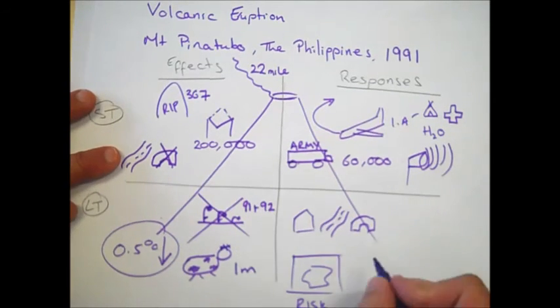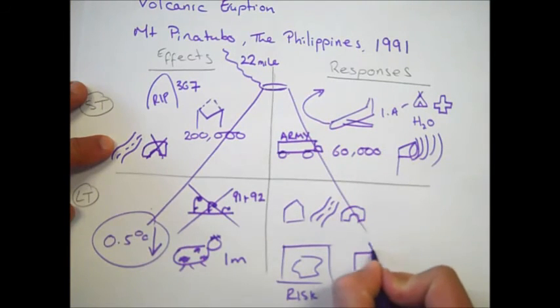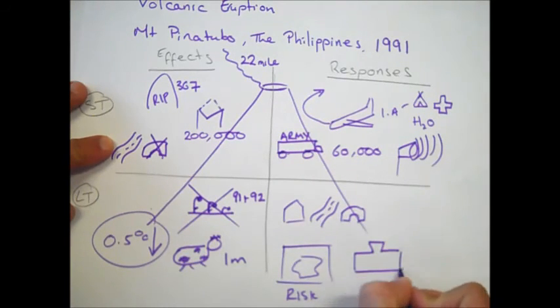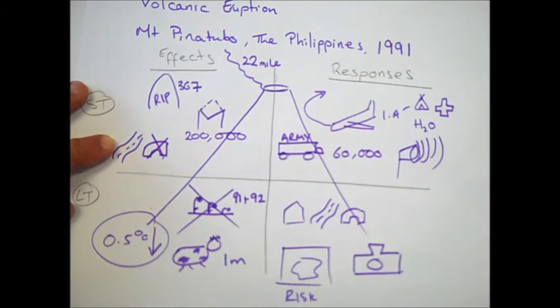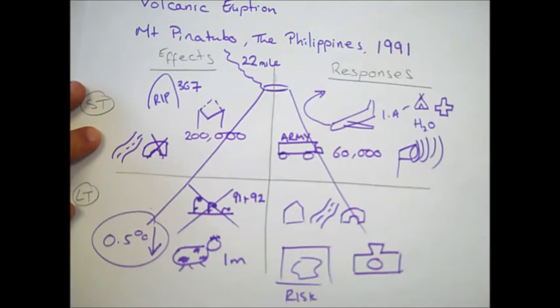We also saw an increase in monitoring. Mount Pinatubo had been dormant and people had become maybe complacent and hadn't been monitoring the volcano as well. So we now have cameras set up around the rim of the volcano to monitor if another potential eruption is about to occur.